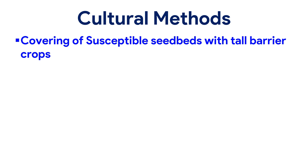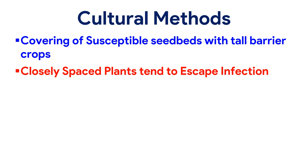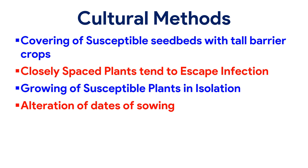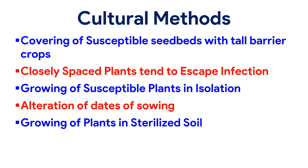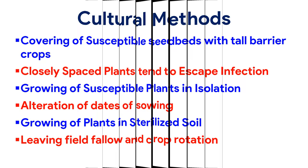Cultural methods include covering of susceptible seed beds with tall barrier crops to prevent the spread of vectors, closely spaced plants tend to escape infection, growing of susceptible plants in isolation, alteration of dates of sowing or changed planting dates, growing of plants in sterilized soil which helps to prevent soil-borne infections, and leaving fields fallow and crop rotation.